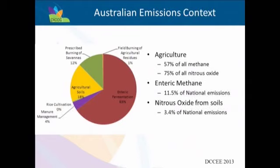Let me break down that agricultural contribution. This pie chart shows what the agricultural proportion is made up of. It's predominantly enteric fermentation - methane produced by the digestion processes in the stomachs of ruminants, mainly cattle and sheep. Enteric methane makes up just around 12% of national emissions. The second biggest source is agricultural soils at 18% - mainly nitrous oxide from nitrogen cycling through fertilisers or animal waste.